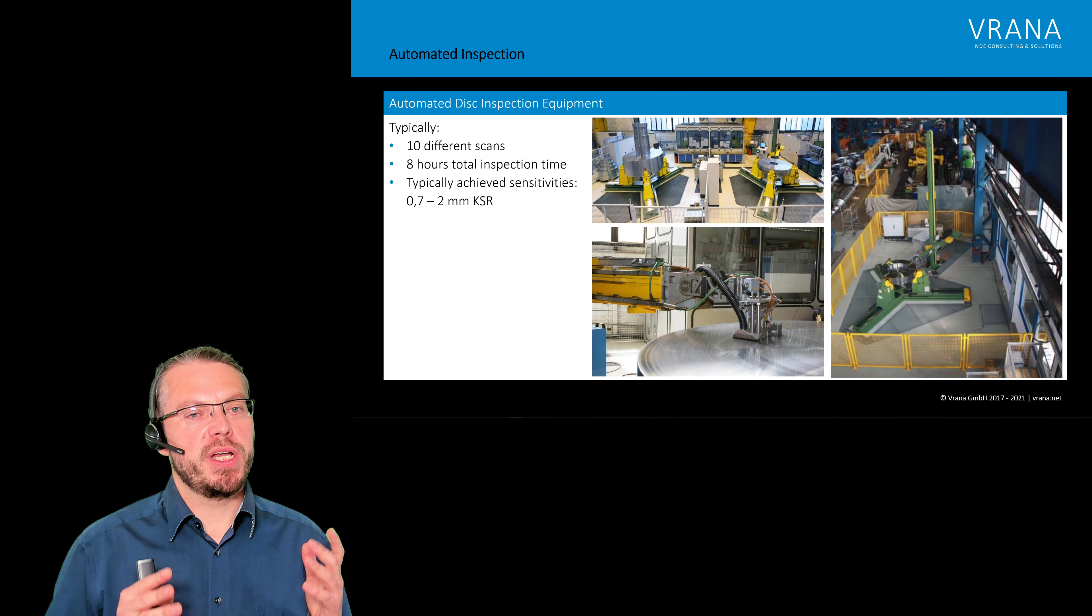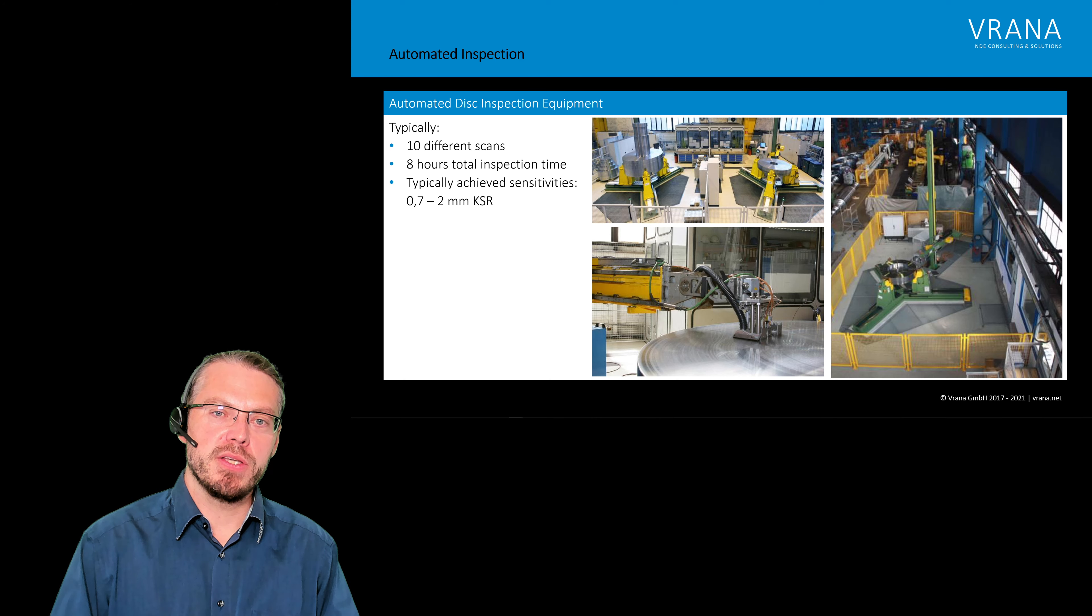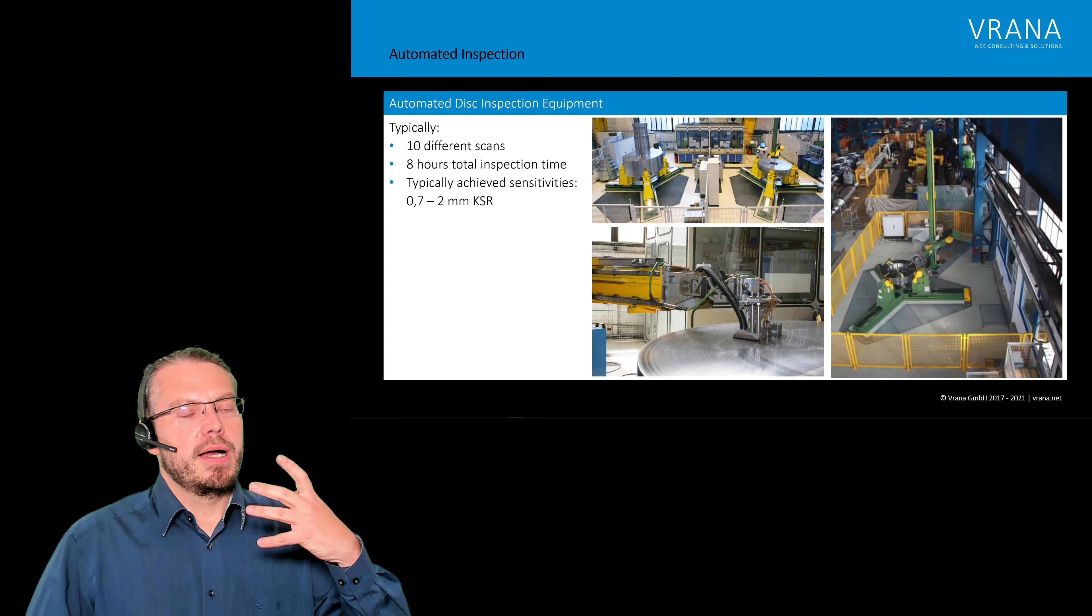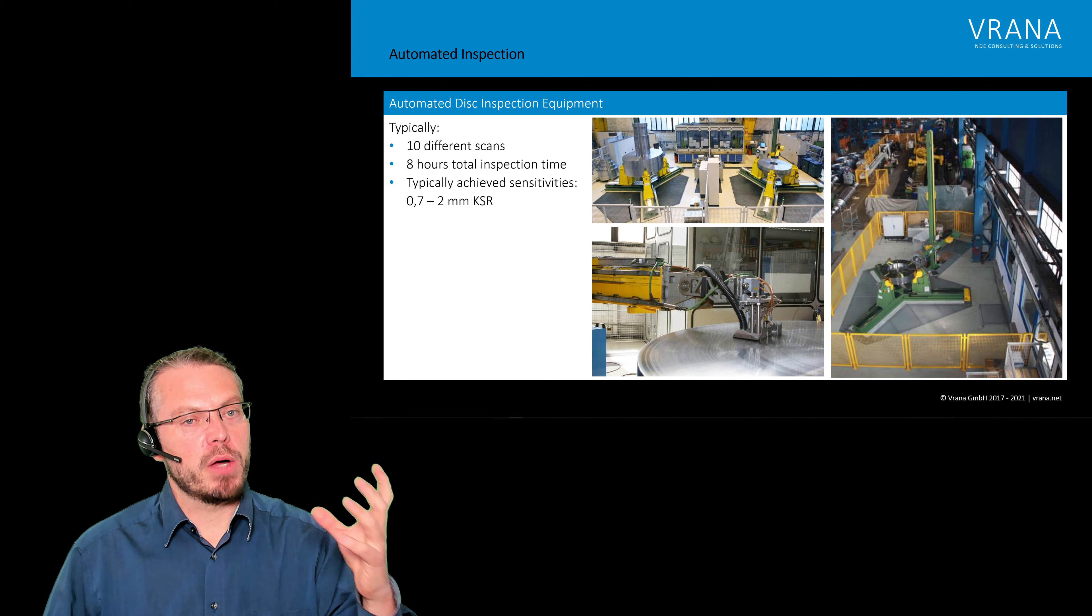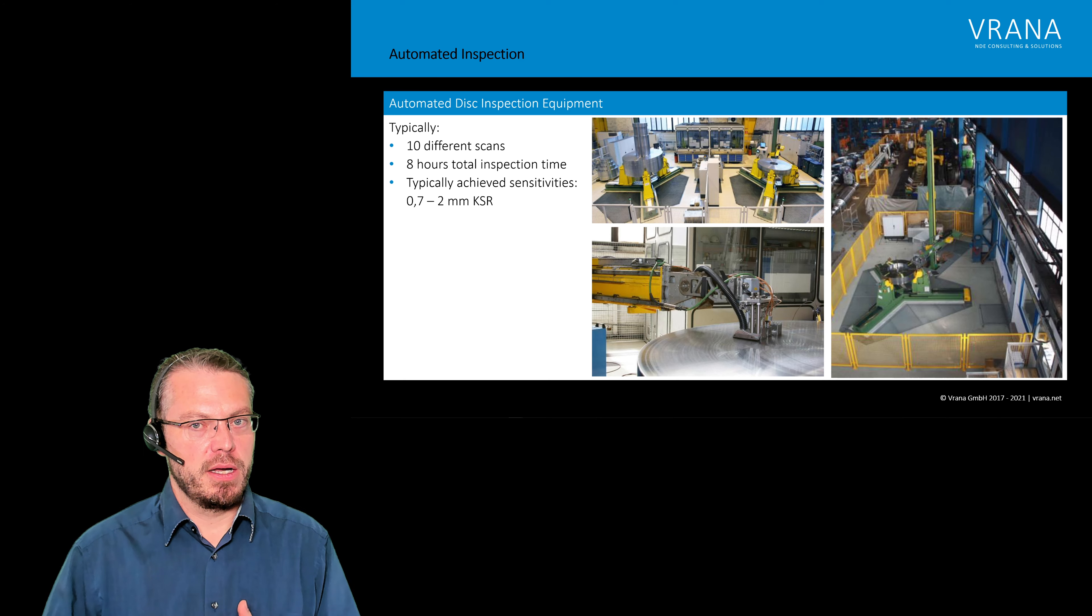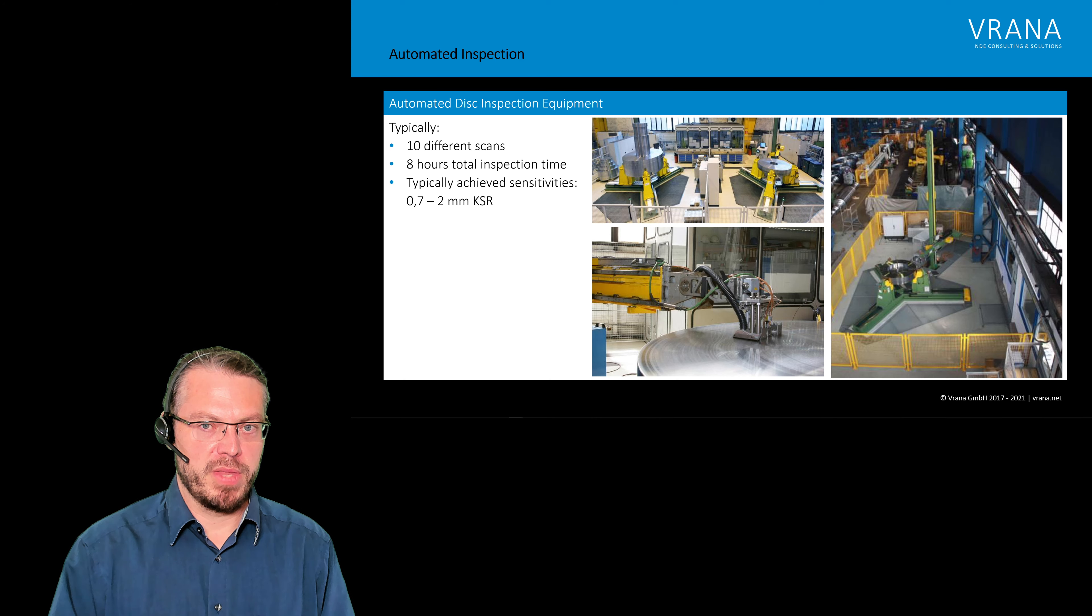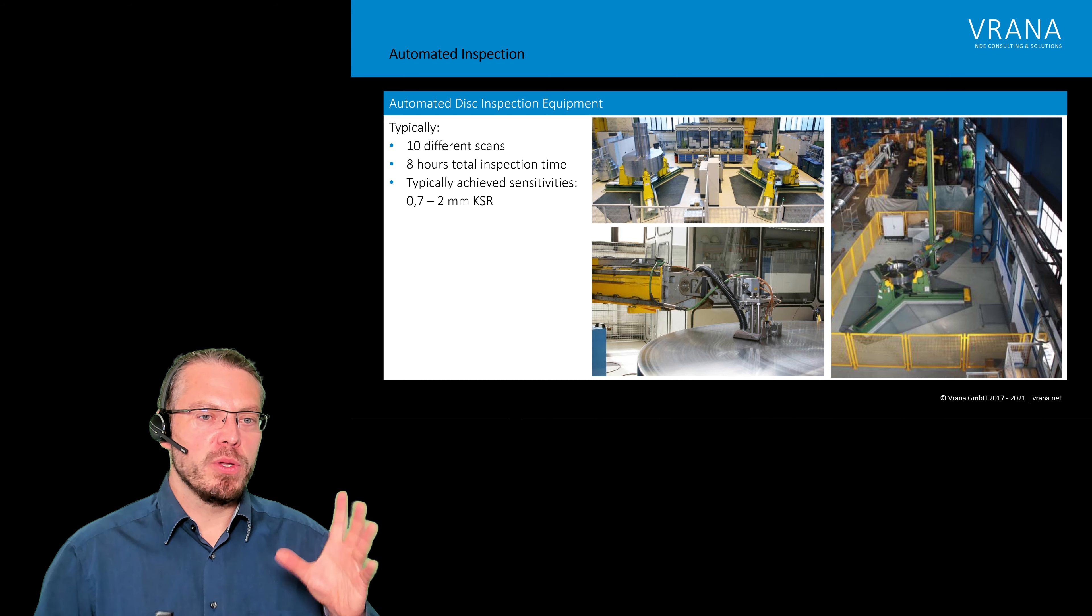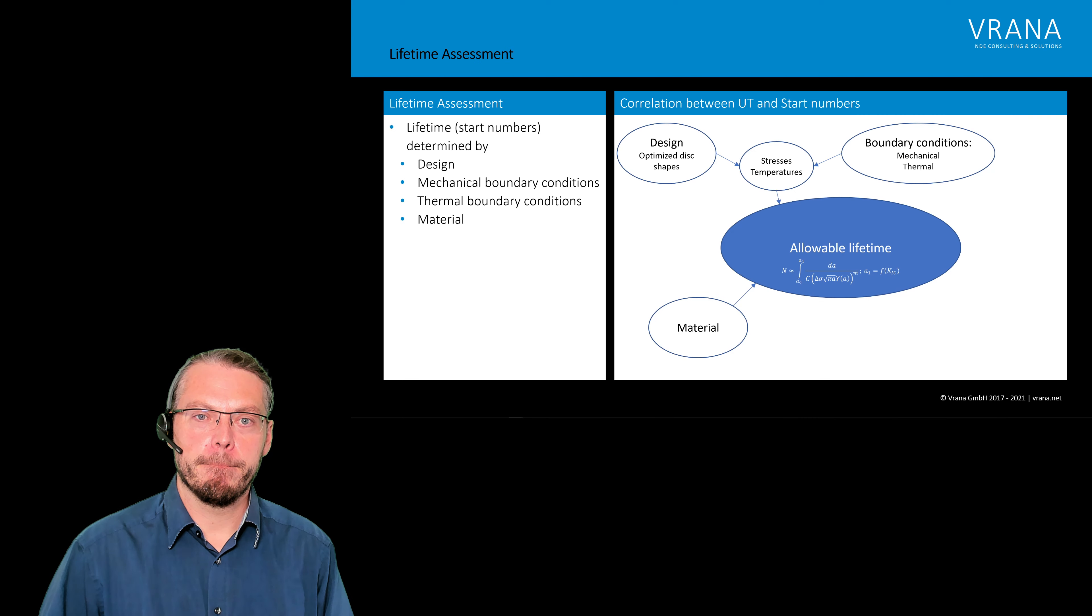What is done on such forgings? They are inspected automatically with ultrasonics. When we're doing a classical NDE inspection, we're doing about 10 different scans using inspection from the OD, from the faces, using angle probes, pitch catch probes, whatever you can imagine to have a really high quality level. It takes about eight hours to do the inspection. Typically, we are looking for indications in the size of about 0.7 to 2 millimeters or bigger.